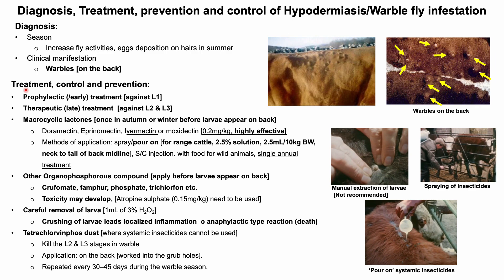Treatment includes early and late approaches. Prophylactic treatment is directed against larval instar 1 before they reach the resting site to avoid economic losses. Spraying insecticide on the host body can also be practiced to kill eggs. Therapeutic or late treatment is directed against warbles containing larval instars 2 and 3 to interrupt the life cycle. Systemic insecticides with macrocyclic lactones such as doramectin, ivermectin, or moxidectin can be used as pour-on or injectable forms for treatment, control, and prevention of Hypoderma species and other myiasis-causing flies.